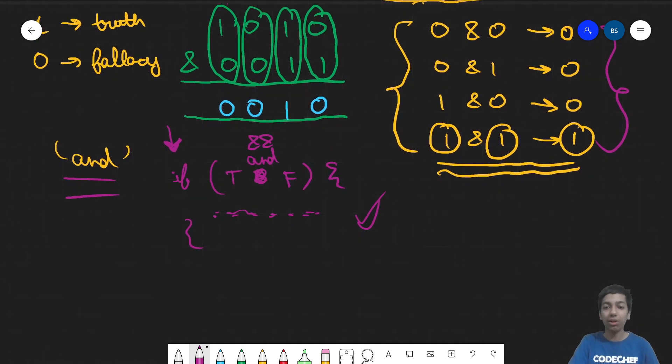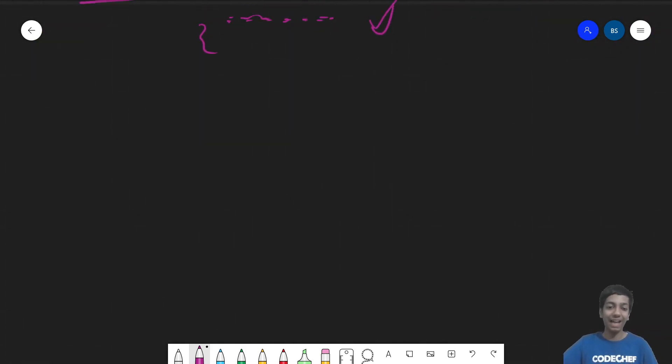So now coming on to another operator, that was about the bitwise AND. Now coming on to the bitwise OR, denoted by this pipe symbol. And this again, let's take up two numbers.